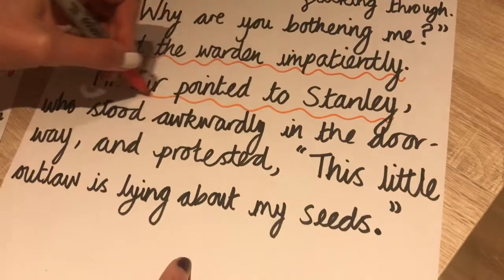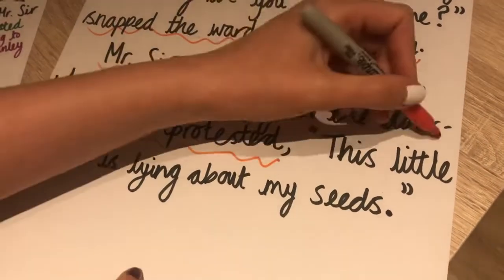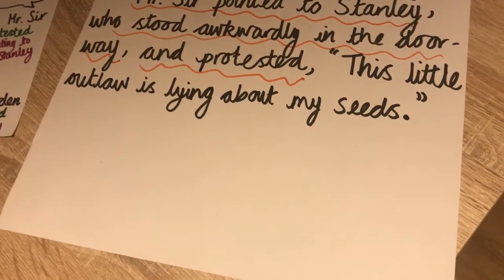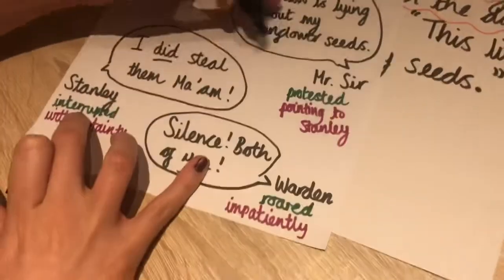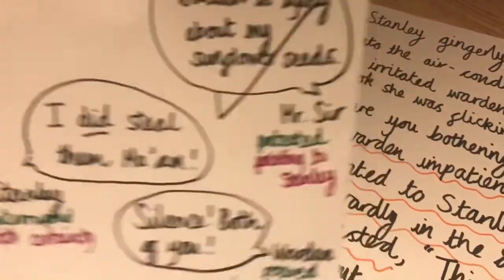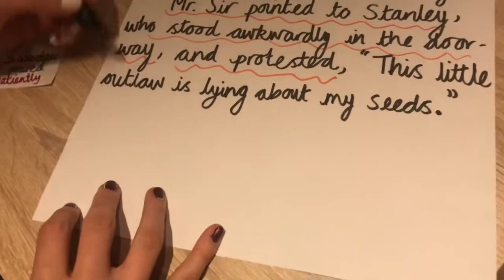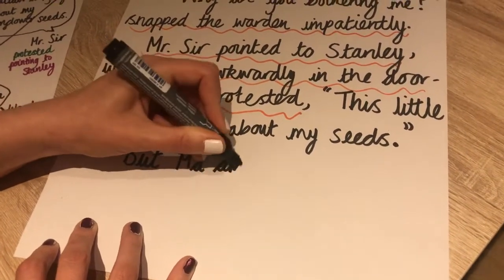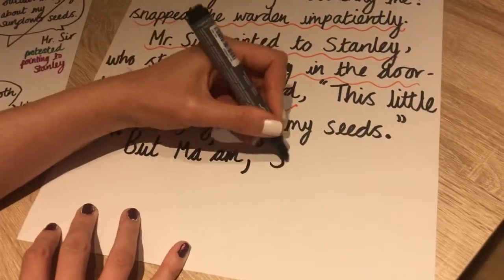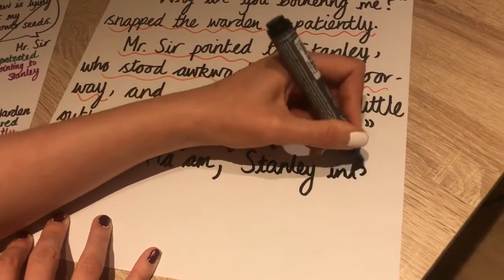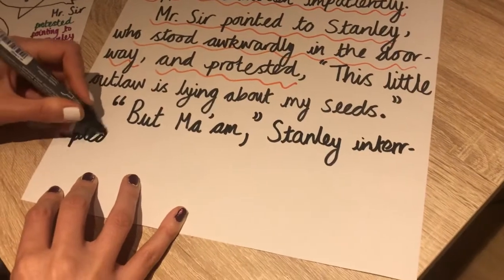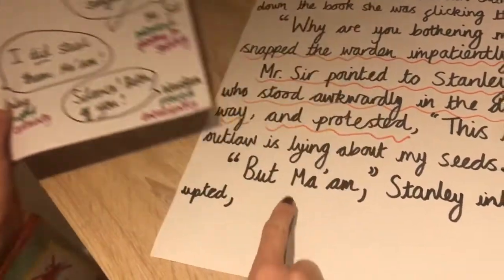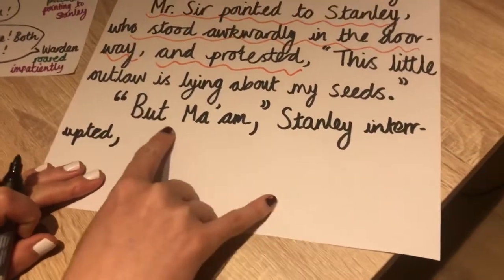Now I'm going to do a reporting clause in the middle of speech — this is a tricky one but I want you to try it. Stanley is going to speak now. New paragraph for Stanley — he's going to start speaking, and I'm changing my plan a little bit — 'But ma'am,' — interrupted — 'but ma'am.' And that 'Stanley interrupted' is what we call the reporting clause in the middle.